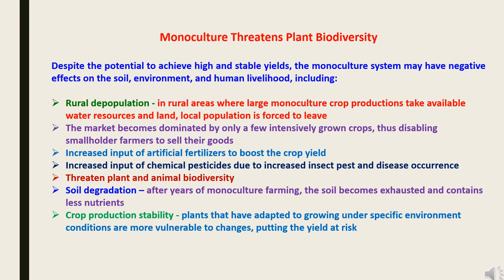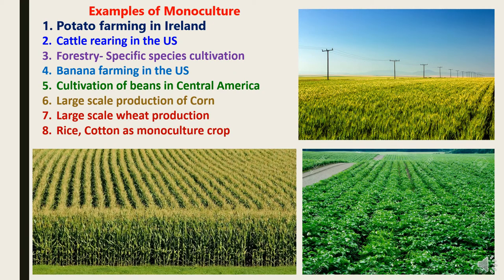Additional concerns include increased input of artificial fertilizers to boost crop yield, increased chemical pesticides due to greater insect pest and disease occurrence, threat to plant and animal biodiversity, and soil degradation — after years of monoculture farming, soil becomes exhausted with fewer nutrients. Crop production stability is also at risk: plants adapted to specific environmental conditions are more vulnerable to changes. Examples of monoculture include potato farming in Ireland, cattle rearing in the United States, forestry with a specific species on a large scale, banana farming, cultivation of beans in Central America, large-scale corn and wheat production, and rice and cotton monoculture crops.